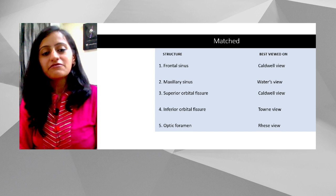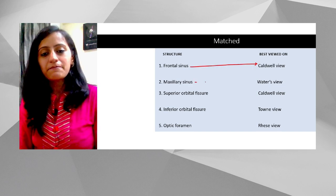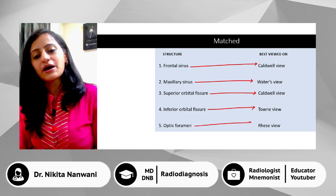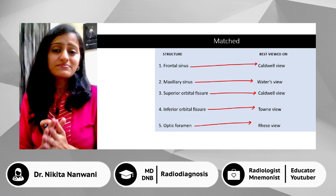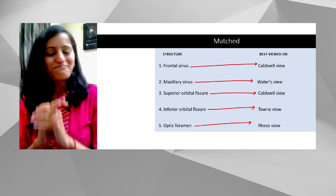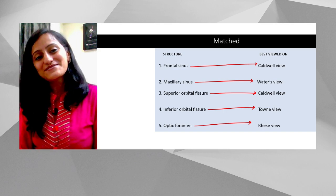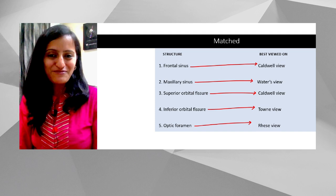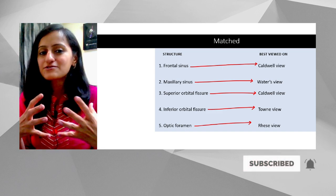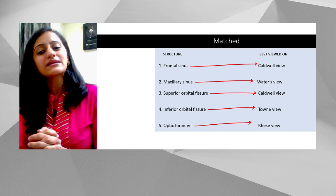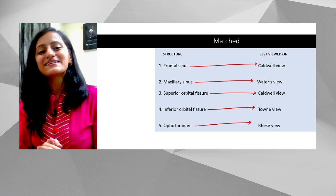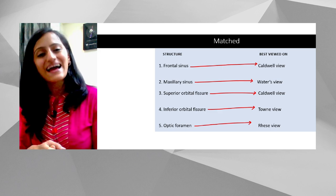Quick final revision: frontal sinus — Caldwell; maxillary sinus — Waters; superior orbital fissure — Caldwell; inferior orbital fissure — Townies; optic foramen — Reese's. I hope this story mnemonic helps you remember the paranasal sinus X-ray views not just for your exam but forever. Please share it with friends, seniors, and juniors, and let me know in the comments if there's any topic you're struggling with. Thank you, goodbye, take care, and keep studying and revising!